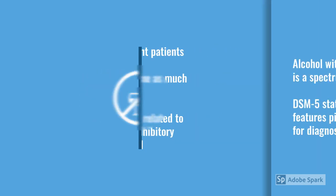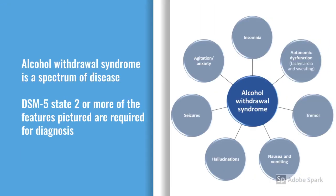If you look at the DSM, essentially we have to have two or more of the following: insomnia, autonomic dysfunction — so thinking about tachycardia, sweating — really common findings. Tremor, nausea, vomiting — very general — agitation and anxiety, very common. And then quite often providers will be called just after an individual has had a seizure — a withdrawal related seizure. Usually these are generalized seizures, right through to things like hallucinations.